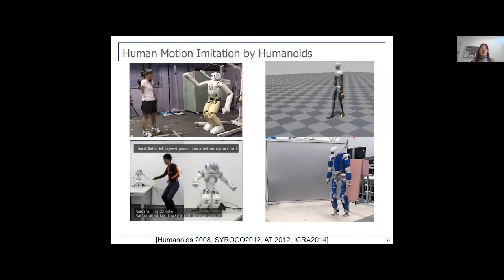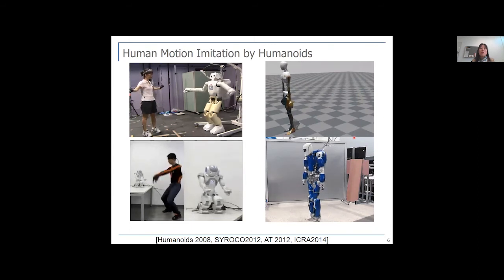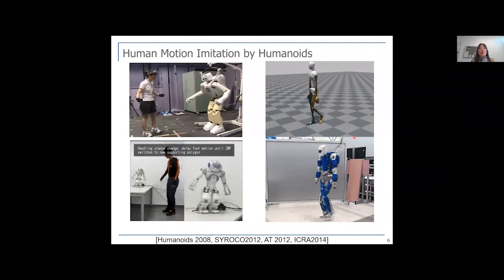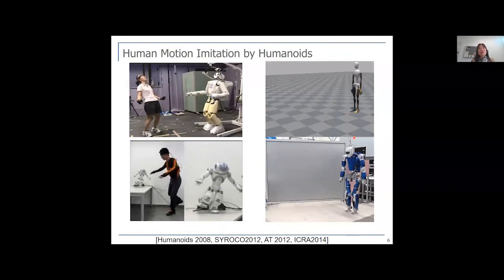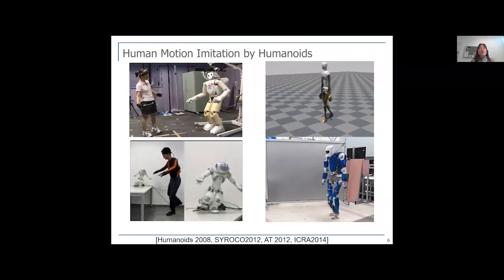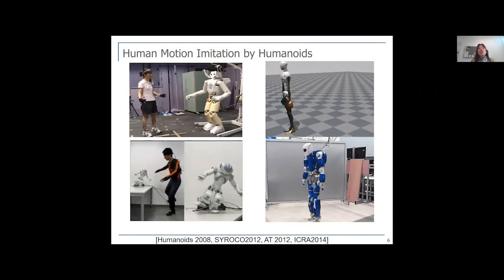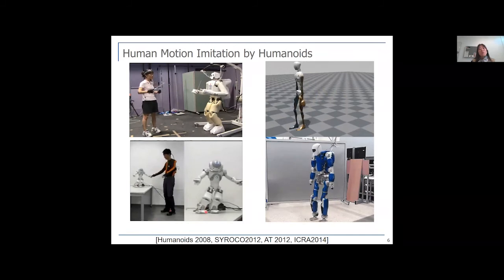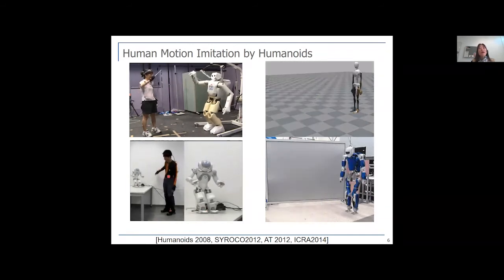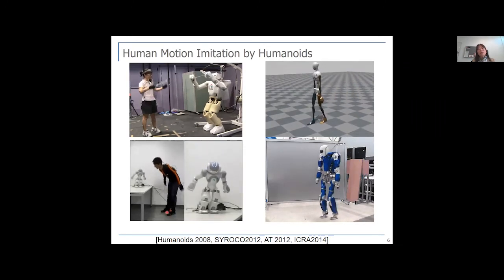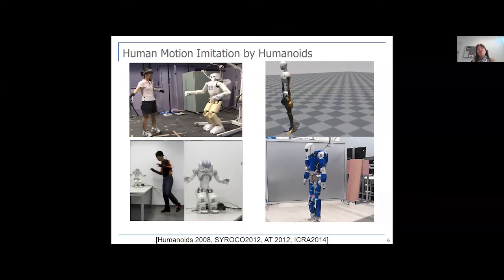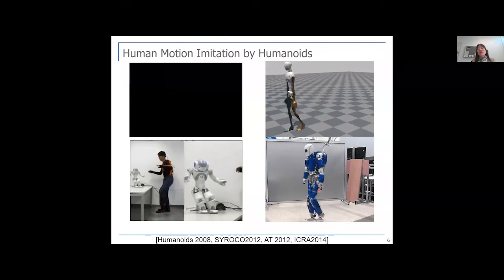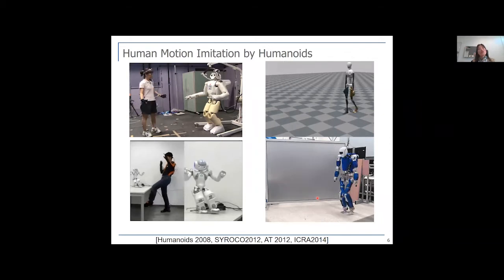I'll now talk about human motion imitation by a humanoid robot. We have been working on human motion retargeting to different robotic systems and from human hand to robotic hand. As you can see in the video, we taught different humanoid robots: a robot can imitate human upper body motions including torso, and a small humanoid robot can imitate foot pose, orientation, human center of mass, and center of pressure. It can also imitate joint angles like knee angles for knee-stretch walking.